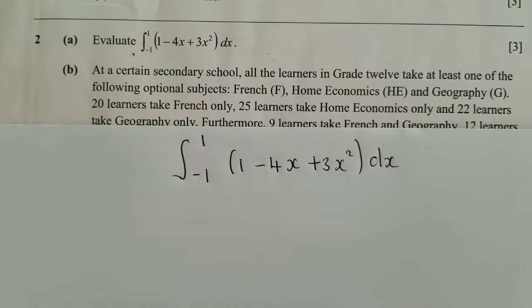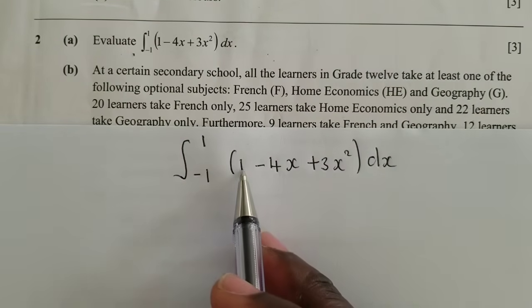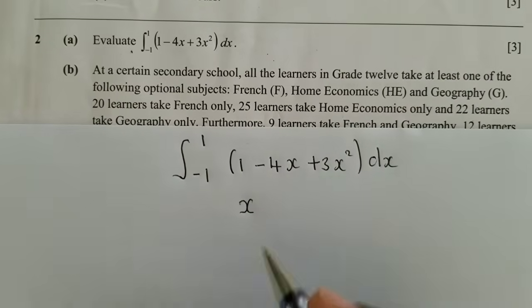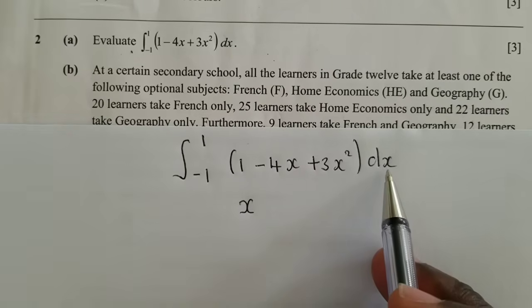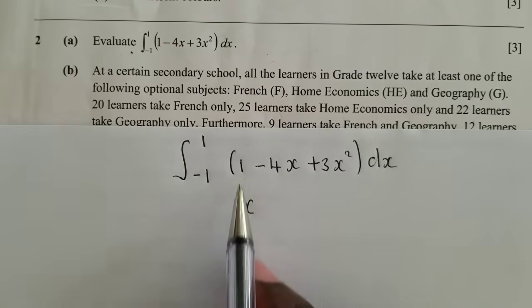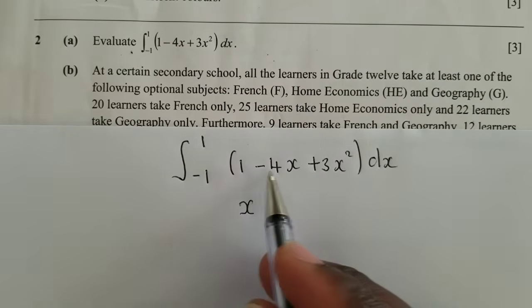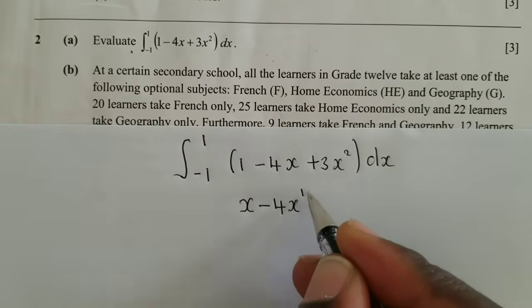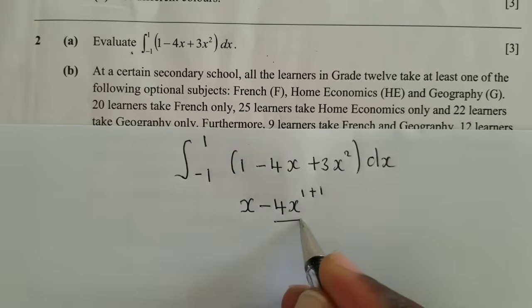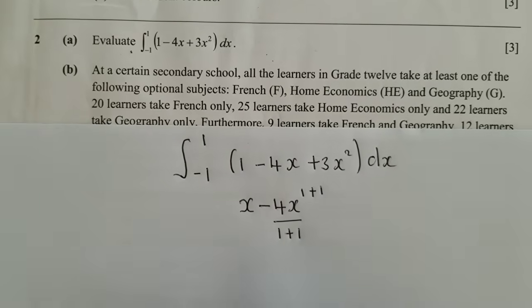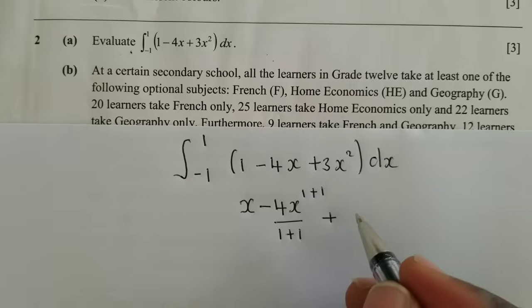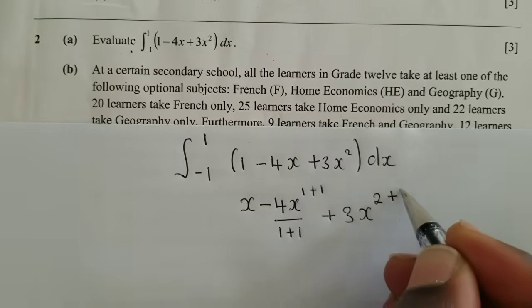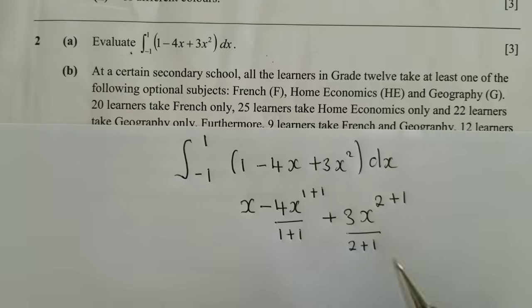I guess by now you are aware that when integrating a constant like this, you just apply the variable that you're respecting. In this case, you are respecting x, so it will be 1x. For this one, it will be 4x power 1 plus a 1 over 1 plus a 1. For this other one, it will be 3x power 2 plus 1 over 2 plus a 1.